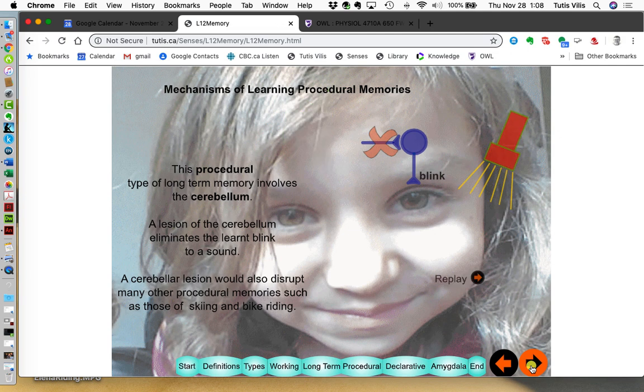Now, this type of procedural memory involves the cerebellum. If there's a lesion in the cerebellum, this type of procedural memory is lost. As are many other types of procedural memories. If you lose your cerebellum, your ability to keep skiing disappears, as does your ability to ride a bicycle. If my colleague John Hoare was still here, you would attest to that because he did research together with me for several decades on the cerebellum.